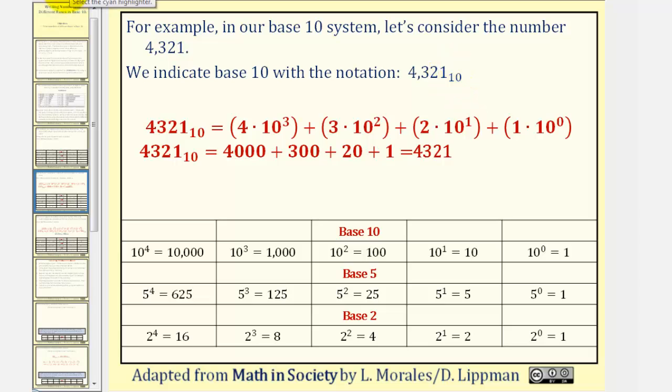Because we're so familiar with the base 10 system, we know this 4 represents 4 one-thousands, but we can also write 1,000 as 10 to the third. The 3 represents 3 one-hundreds, but we can also write 100 as 10 to the second.